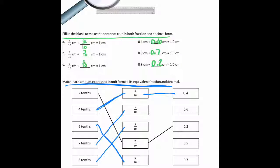Here, 0.4 is 4 tenths. 0.6 is 6 tenths. 0.2 is 2 tenths. And 0.5 is 5 tenths. And 0.7 is 7 tenths.